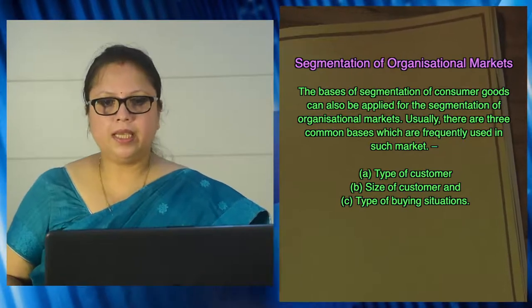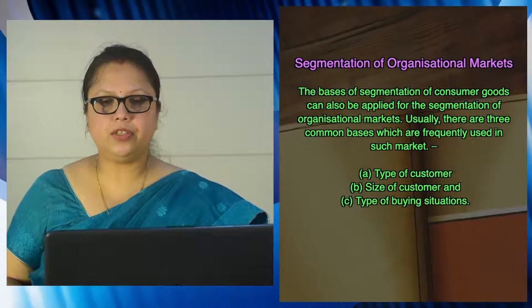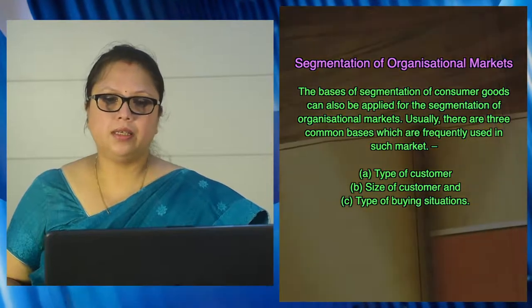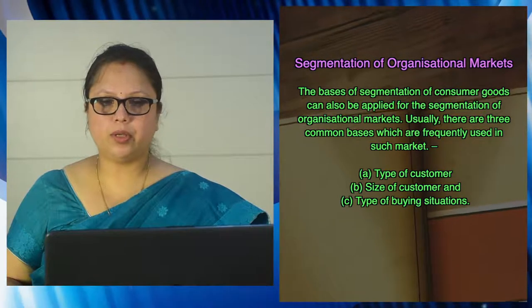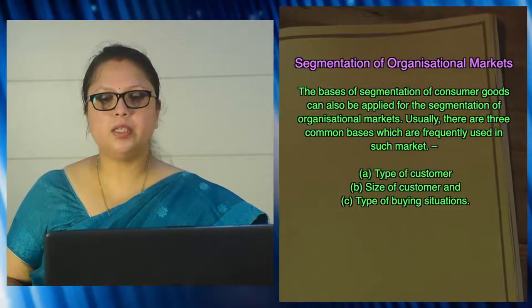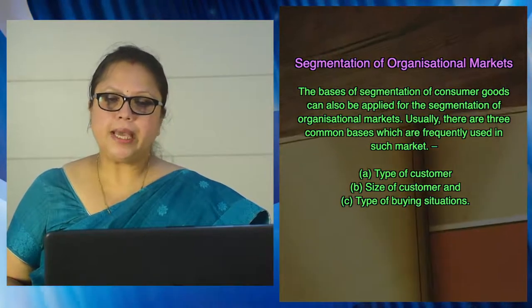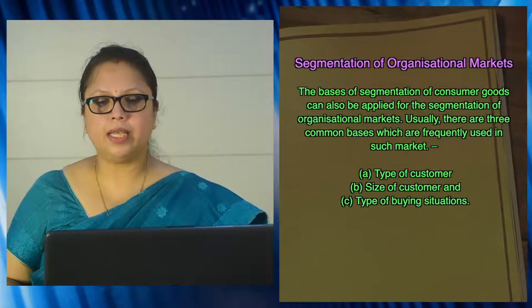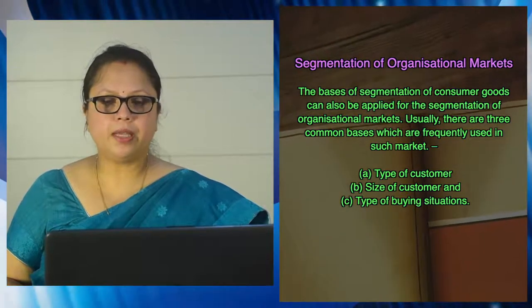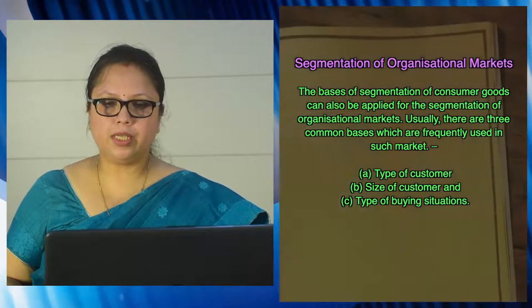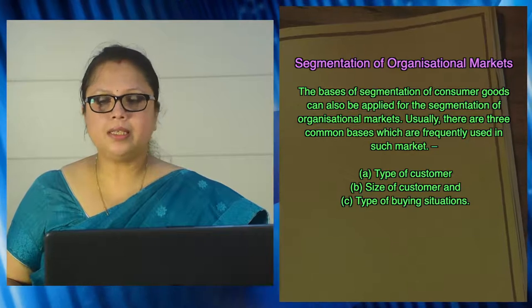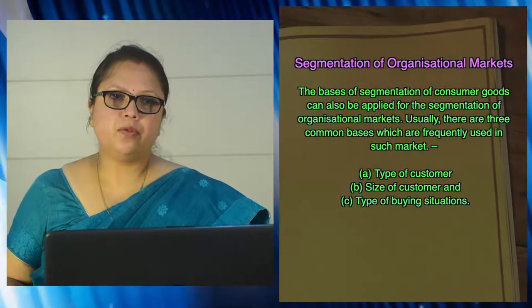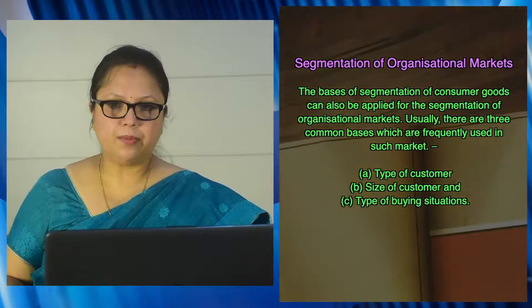Then, based on size of customers, the size of an industry or trading house may be small, medium, or large, and accordingly their purchase orders will vary. The marketer may have separate marketing policies for bulk purchases versus small purchases. Then, based on type of buying situation, the marketer can classify buyers as: new buyer — those purchasing the product for the first time; modified buyer — those who previously purchased but have made slight modifications; and straight rebuy — those continuing the same type of purchase as before.